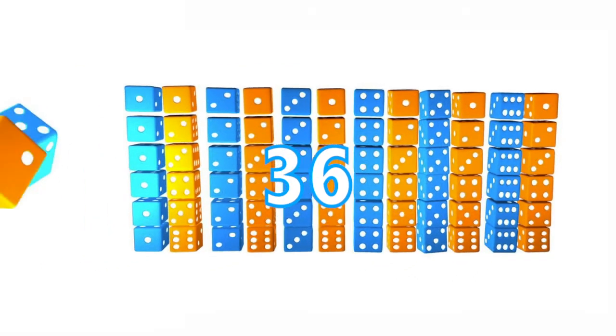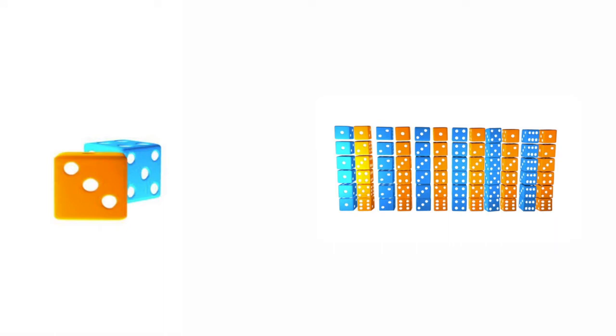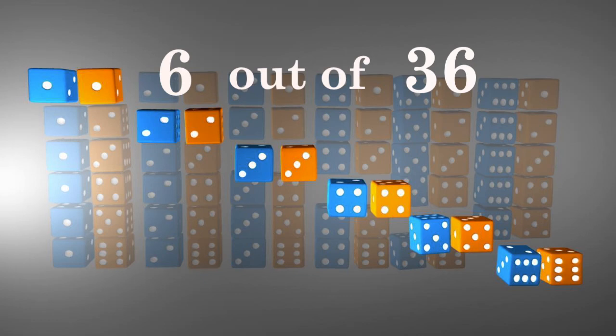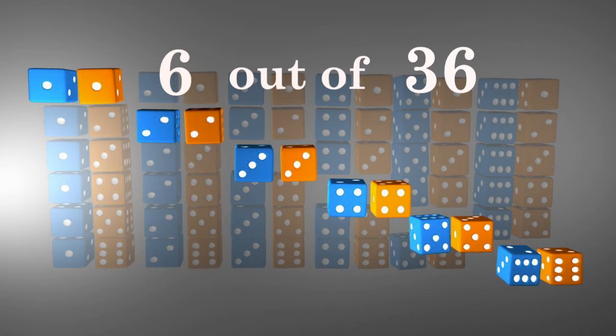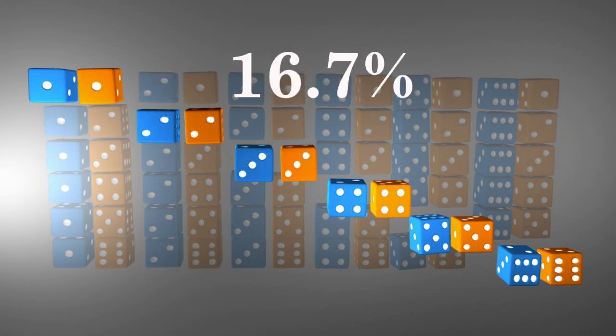So the probability that these two dice will land on any one of these combinations is one out of 36. The probability that these two dice will land on the same number is six out of 36, or one-sixth, or 16.7%.